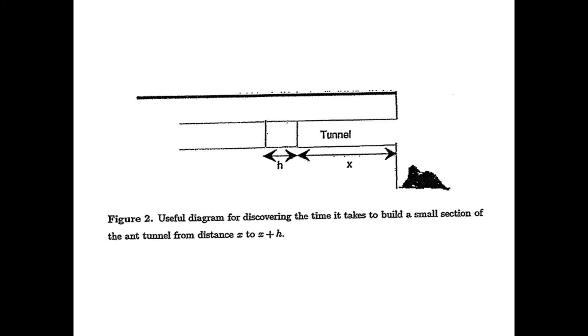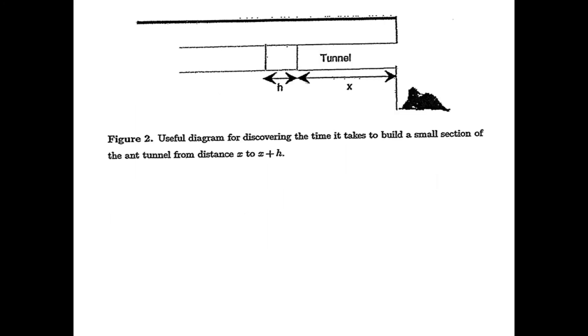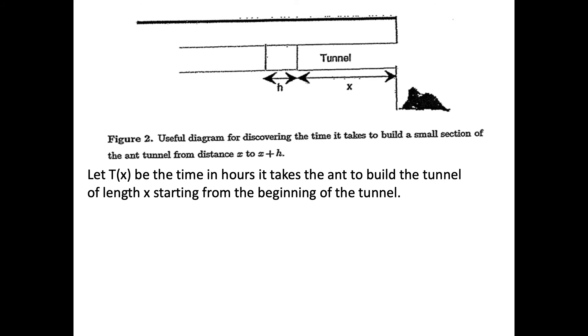They struggle with the idea that maybe t of x plus h might be a good thing to talk about. It takes a while, but finally we talk about what about t of x plus h and what does t of x plus h depend on. If t of x is the time in hours it takes the ant to build the tunnel, then the time it takes to build the small section of tunnel is t of x plus h minus t of x. That's fabulous to have people start thinking about that numerator of the derivative appearing in these kinds of problems.